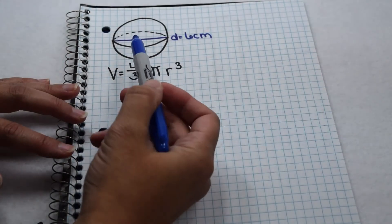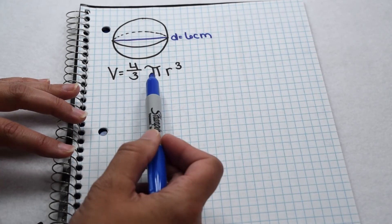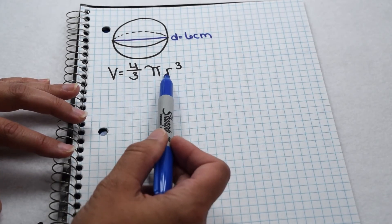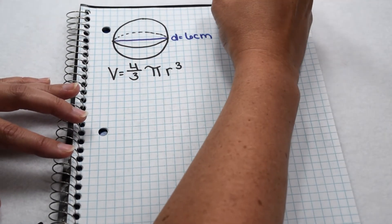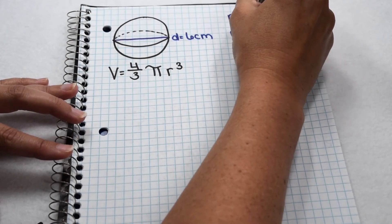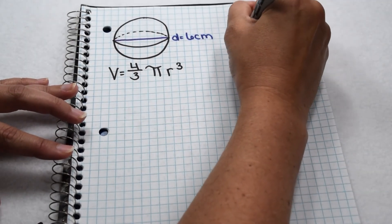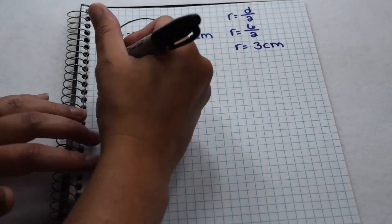Let's use our equation to find the volume of the sphere. Volume of a sphere is four-thirds times pi times radius cubed. The first thing we notice is on this sphere they give us a diameter of six, which means we need to find its radius. Radius is always half the diameter, so six divided by two is three, so on this sphere our radius is three centimeters.